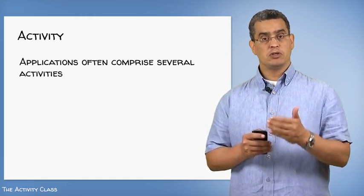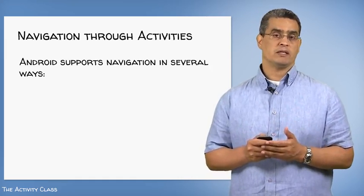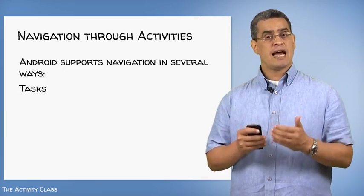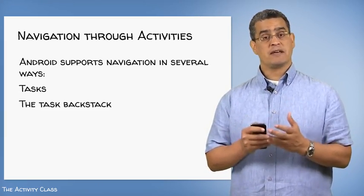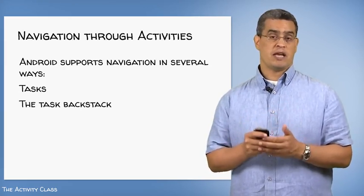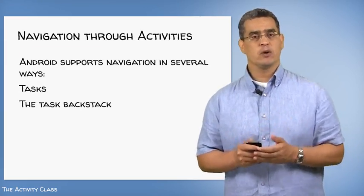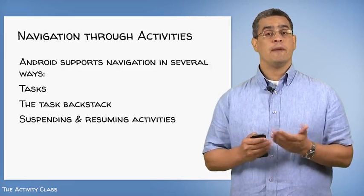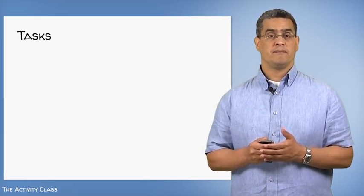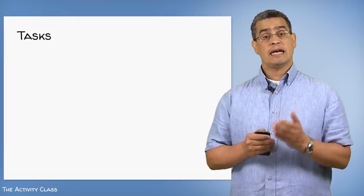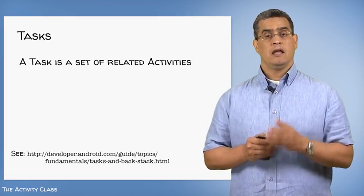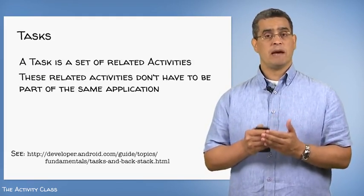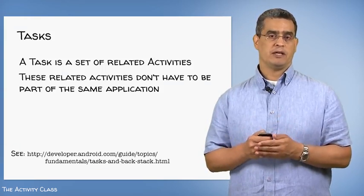Android helps users do this navigation in a couple of ways: by supporting the concept of tasks, by providing a task backstack for managing the specific activities through which the user is navigating, and by ensuring that activities are properly suspended and resumed as they're pushed on and popped off the task backstack. In Android, a task is simply a set of related activities. These related activities can, but don't have to be, part of the same application, so tasks can span multiple applications.